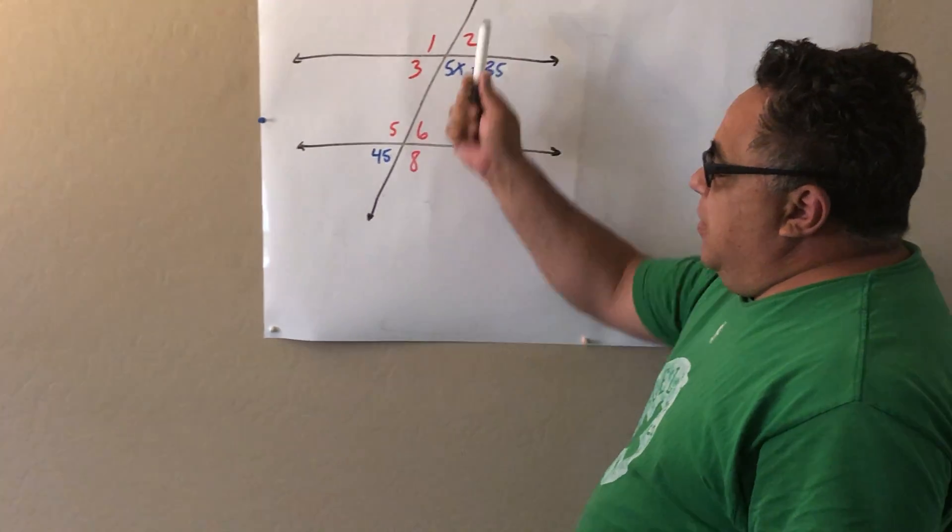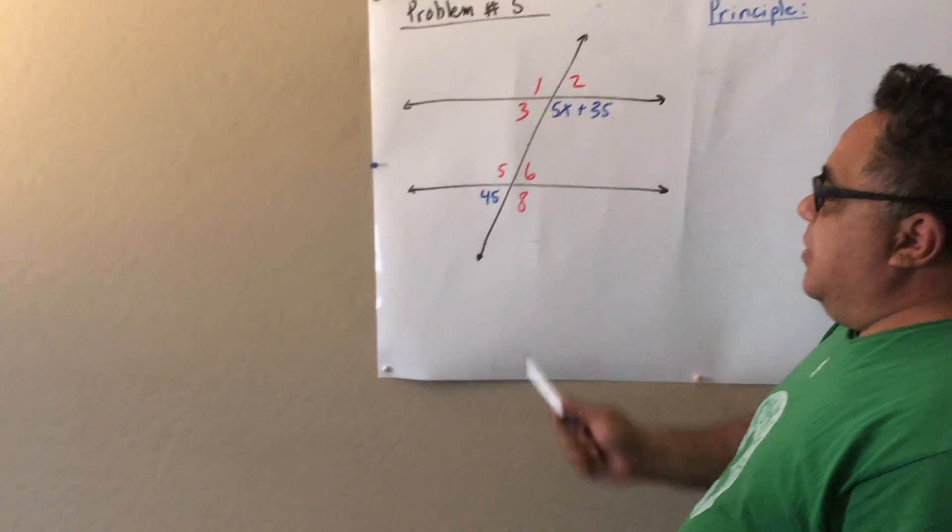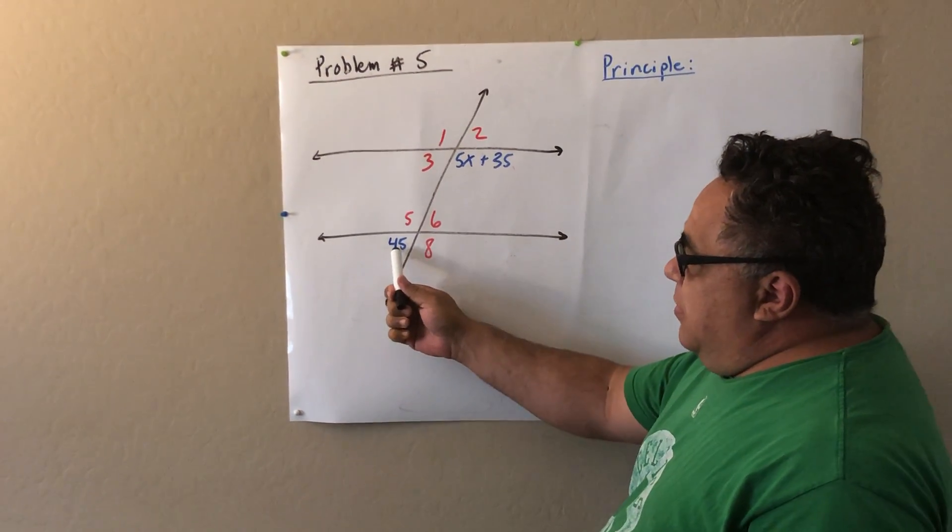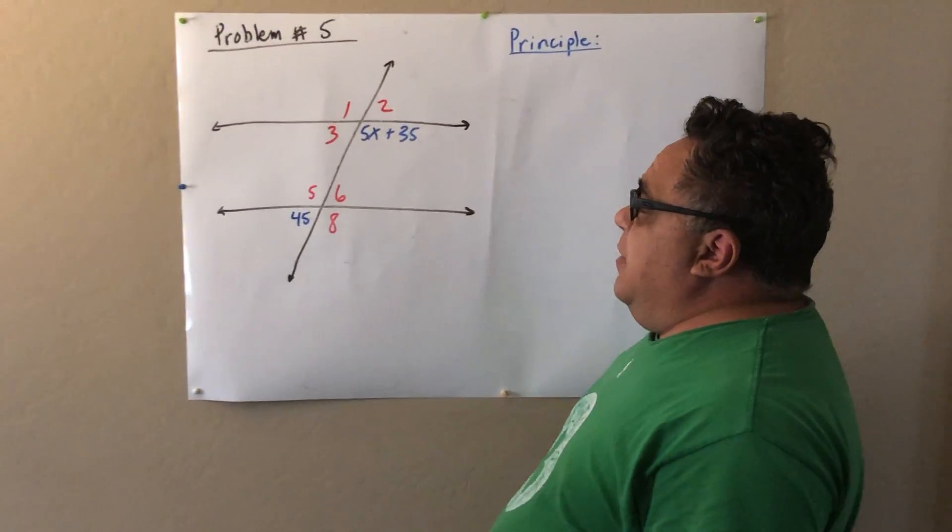Here's what we have right here. We have two parallel lines and a transversal across two lines. The thing that the problem tells me is I have these two angles here in blue, 45 degrees and 5x plus 35.